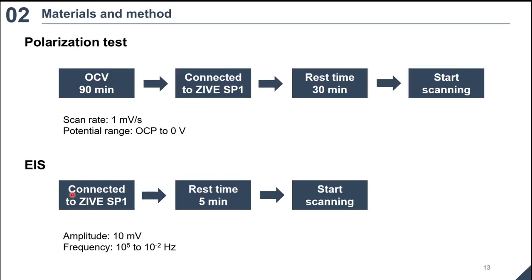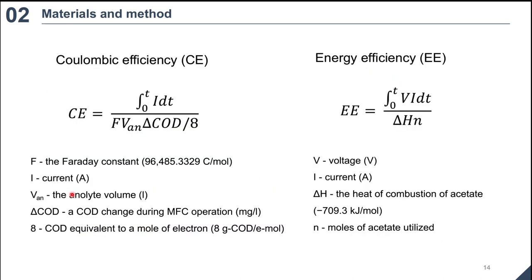Coulombic efficiency CE and energy efficiency EE was calculated as this. F is the Faraday constant, I is current, V_an is the anode volume, delta COD is COD change during MFC operation, 8 is COD equivalent to a mole of electron. V is voltage, I is current, delta H is the heat of combustion of acetate, N is moles of acetate utilized.